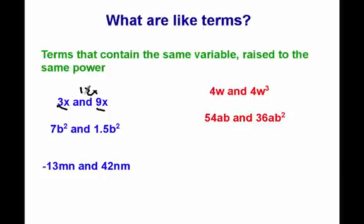If I add 3x and 9x, I get 12x. By the same idea, b squared is the variable for these two terms: 7b squared and 1.5b squared. It's the same variable, raised to the same power, so I can combine the two of these and get 8.5b squared.